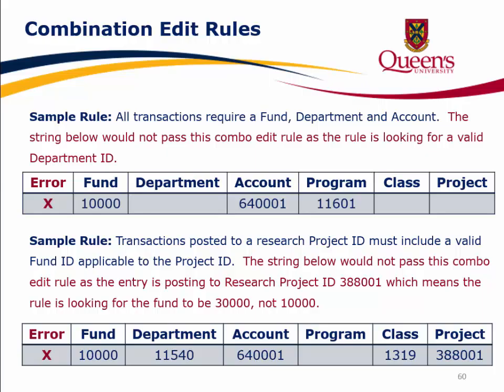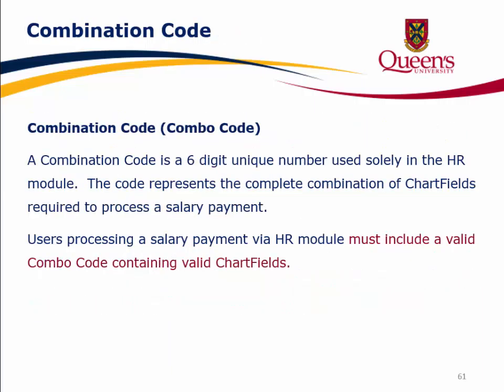Combination edit rules — here is a sample rule: all transactions require a fund, department, and account. A string would not pass this combo edit rule if it is missing a valid department ID. Another sample rule: transactions posted to a research project ID must include a valid ID applicable to the project. A string posting to research project ID 388001 would not pass if the fund is 10,000 rather than 30,000. A combination code (combo code) is a six-digit unique number used solely in the HR module, representing the complete combination of chartfields required to process a salary payment. Users processing a salary payment via the HR module must include a valid combo code containing valid chartfields.